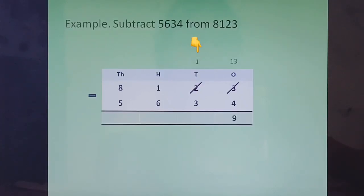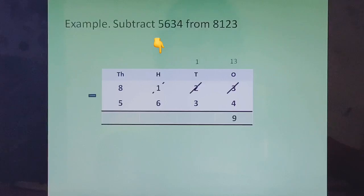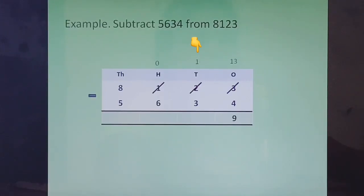Now let's come to the tens column. We have 1 minus 3. We can't do 1 minus 3. So again we go to the left side neighbor, which is 1 hundreds. We will cut this 1 and write 0 on top. When a hundred comes to the tens column, it becomes 10 tens. So 10 tens plus 1 ten will make 11 tens. We cut 1 and write 11. 11 minus 3 is 8.